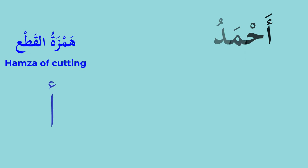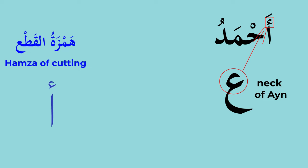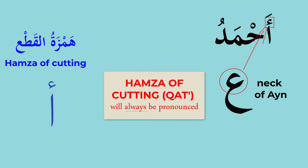But if I write 'Ahmed' — you see I put the neck of Ayn here? Hamza is written as a neck of the Ayn. This is Hamzatul Qata — you have to pronounce it whenever it comes and wherever it comes. If I add 'Wa' in front, you say 'Wa Ahmedu' — you cannot skip it now, brothers and sisters. You will always, always pronounce it no matter where it comes.